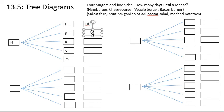So this HP would mean hamburger and poutine. The HG is hamburger and garden salad. The HC is hamburger and Caesar salad.